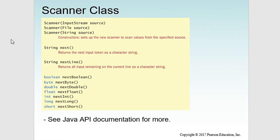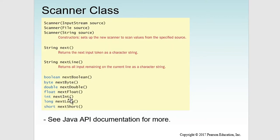Other methods you can use are: next, nextLine, nextBoolean, nextByte, nextDouble, nextFloat, nextInt, nextLong, and nextShort. These all return specific data types.